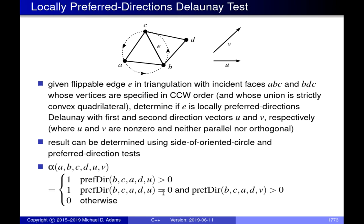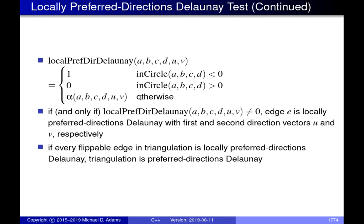When we have a tie with direction vector U, we break it by instead using direction vector V, repeating the same test. Because V and U are not allowed to be parallel or orthogonal to one another, we can never have a tie in the second case — the condition can never equal zero. This extra case handling for inCircle(ABCD) equal to zero eliminates the possibility of multiple answers, so this always leads to a unique triangulation.